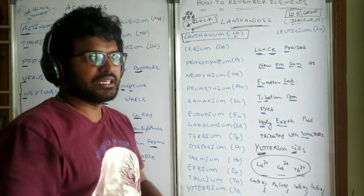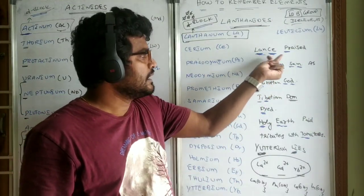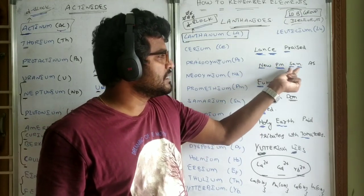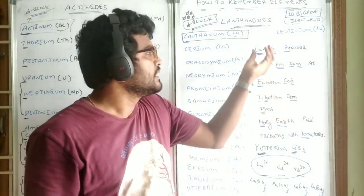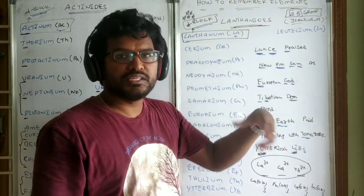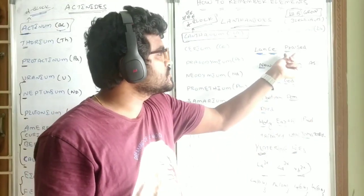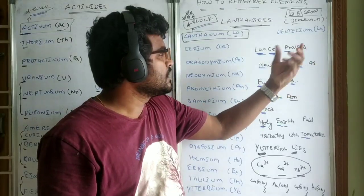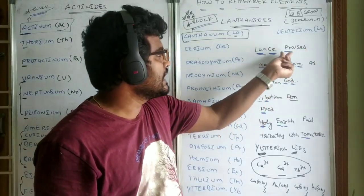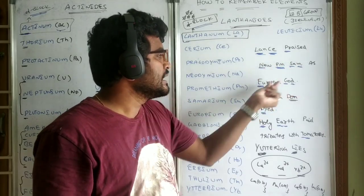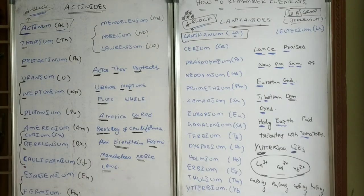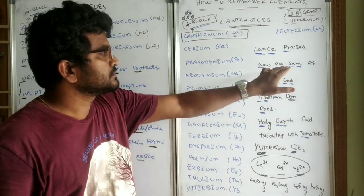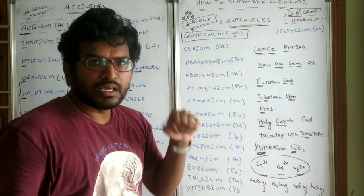The mnemonic is: Lance praised new PM Sam as European god. Lance is a person. Lance praised new PM Sam as European god. This represents lanthanum, cerium, praseodymium, neodymium, promethium, samarium, europium and gadolinium.